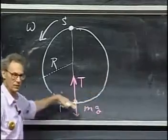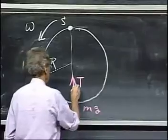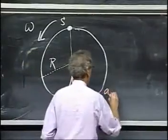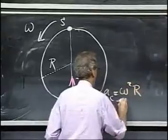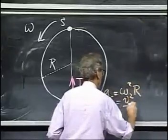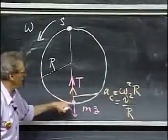a centripetal acceleration upwards. Otherwise, you could never do this. Remember from the uniform circular motion. So there must be here a centripetal acceleration, which is omega squared R, or if you prefer v squared divided by R, if v is the speed, tangential speed, at that point. It must be there.